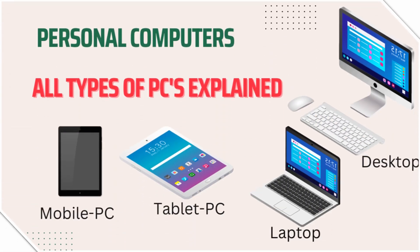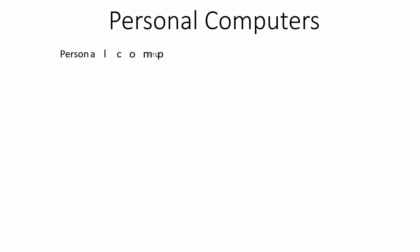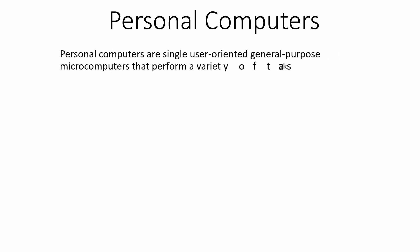Hello everyone, in this video I will talk about personal computers — all types of PCs will be explained in detail. But before that, let's see what personal computers are. Personal computers are single-user oriented, general-purpose microcomputers that can perform a variety of tasks. They are used by a single person at a time and are multi-purpose computers.